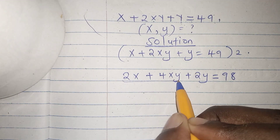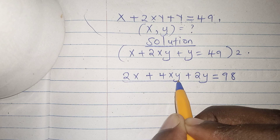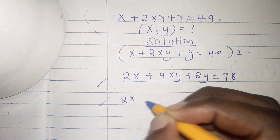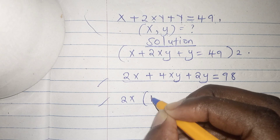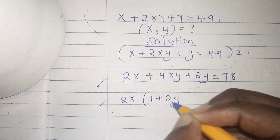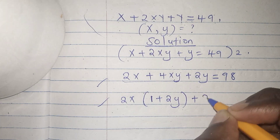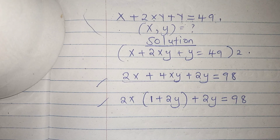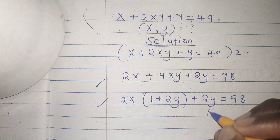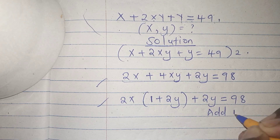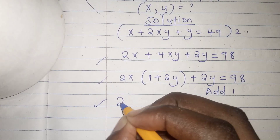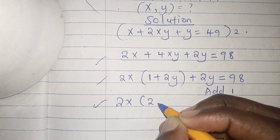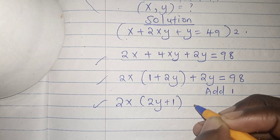For the first two terms, we factor out 2x as the common factor, giving us 2x times (1 plus 2y), bracket, plus 2y equals 98. We then add 1 on both sides, and rearrange to get 2x times (2y plus 1) plus (2y plus 1) equals 99.